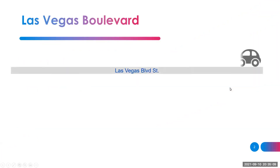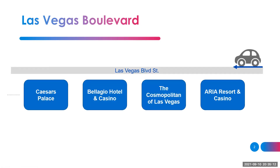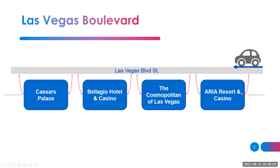In Las Vegas there's one main street called Las Vegas Boulevard, and around it there are a number of casinos. I'm showing you four of them: Aria Resort, the Cosmopolitan of Las Vegas, Bellagio, and Caesars Palace. Typically if you go to Las Vegas you'll travel by car, or you can drop your car and start walking from one casino to the other, going inside each one, having fun, and then moving to the next because they are very close to each other.